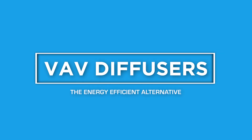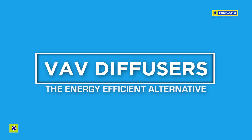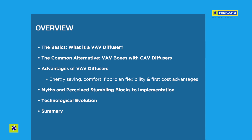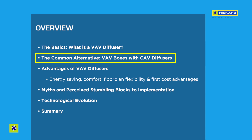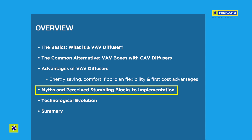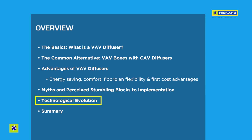VAV Diffusers: The Energy Efficient Alternative. This presentation aims to give an overview of VAV diffusers, discusses VAV boxes as the common alternative, explains why VAV diffusers offer energy-saving, comfort, floor-plan flexibility and first-cost advantages, explains the common myths and perceived stumbling blocks to implementing VAV diffusers in your building, gives some examples of the technological evolution of VAV diffusers, and lastly gives a quick summary.